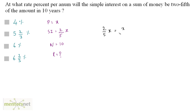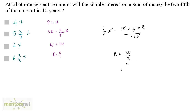Using the formula SI = PNR/100, we get 2/5 x equals x times 10 times R divided by 100. The zeros and the x's cancel out, giving R equals 2 times 10 divided by 5, which is 20 by 5. Therefore R equals 4 percent. So option A is the correct answer.